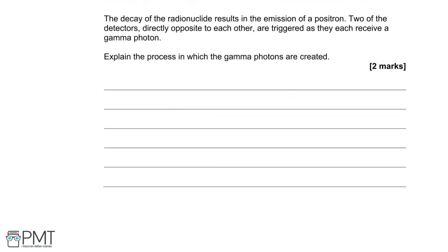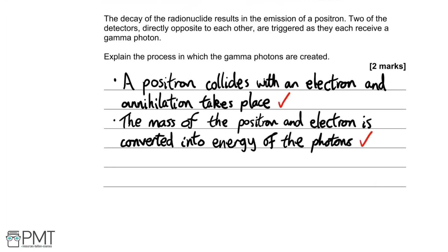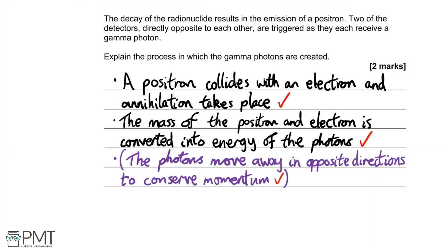The decay of the radionuclide results in the emission of a positron. Two detectors directly opposite each other are triggered as they each receive a gamma photon. Explain the process in which the gamma photons are created. This process is called annihilation, where matter — an electron — and antimatter — a positron — come into contact and annihilate to produce photons. The first mark is for mentioning annihilation; the second mark is for stating the energy of the photons equals the mass-energy of the original positron and electron, or alternatively that photons travel in opposite directions to conserve momentum.